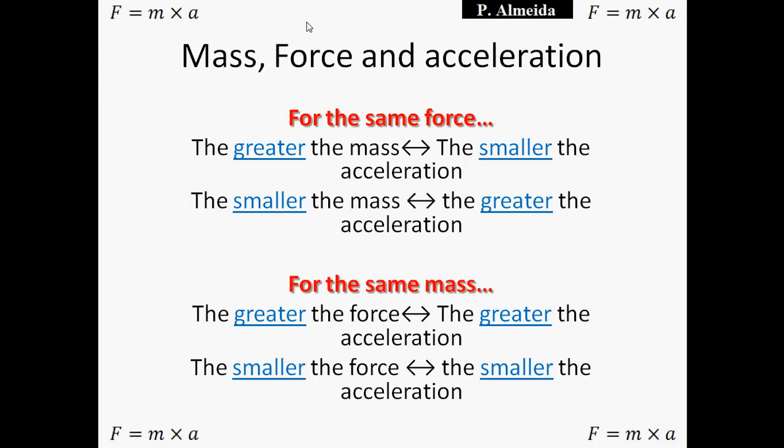Think of it this way: if you apply the same force to push a dog and an elephant, the dog will accelerate much more easily — it has a greater acceleration. Bigger mass means it's more difficult to accelerate the object for the same force. Conversely, if you have the same mass, the greater the force, the greater the acceleration; the smaller the force, the smaller the acceleration.